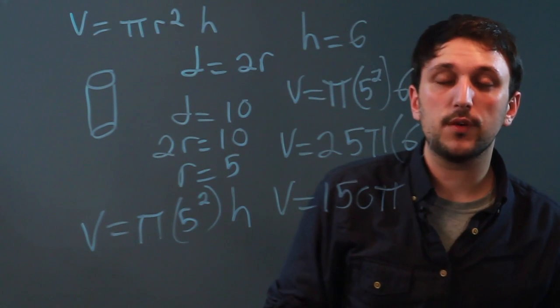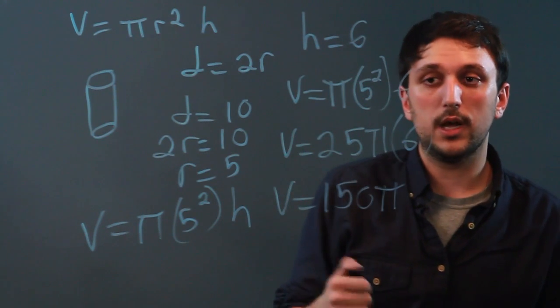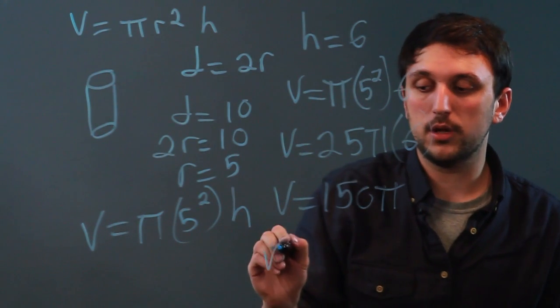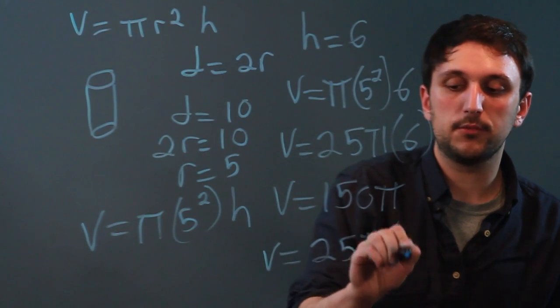So in order to find the volume of a cylinder using the diameter, you would need the height. Otherwise, if we didn't know the height, we would have to call it volume equals 25 pi times h.